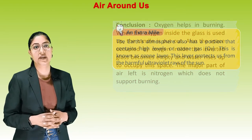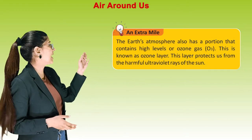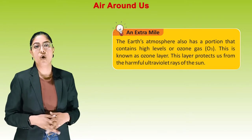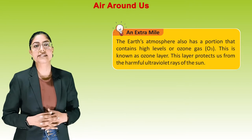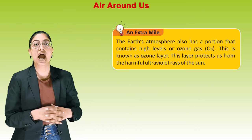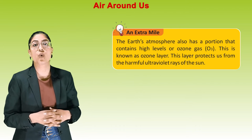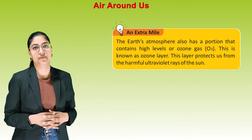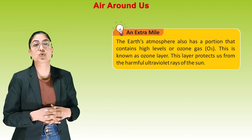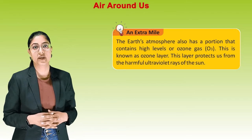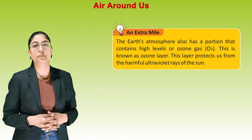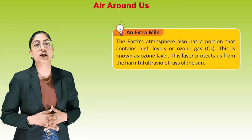Extra mile: the earth's atmosphere also has a portion that contains high levels of ozone gas O3 — this is known as the ozone layer. This layer protects us from the harmful ultraviolet rays of the sun.